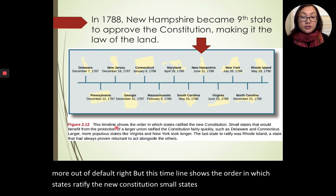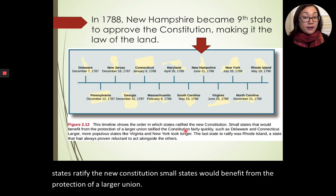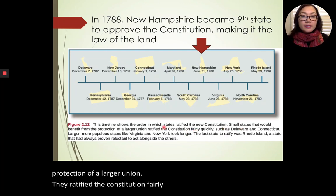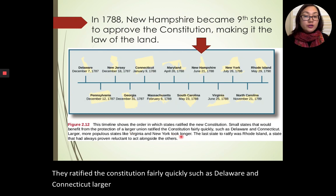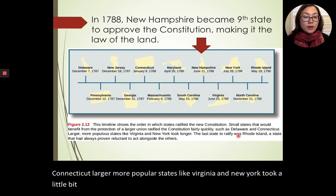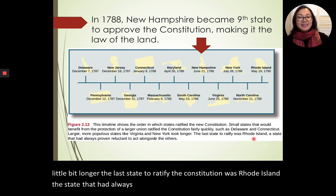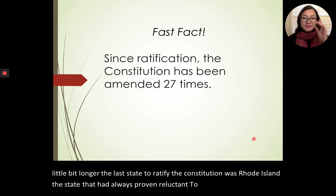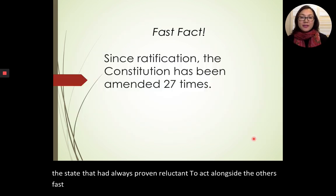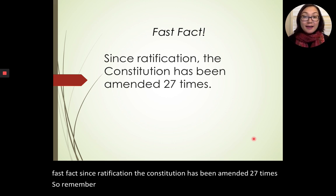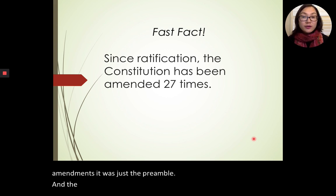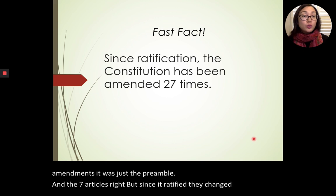Small states ratified the Constitution fairly quickly, such as Delaware and Connecticut, because they would benefit from the protection of a larger union. Larger, more populous states like Virginia and New York took a little longer. The last state to ratify was Rhode Island, which had always proven reluctant to act alongside the others. Since ratification, the Constitution has been amended 27 times — the original Constitution was just the preamble and seven articles.